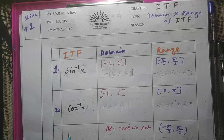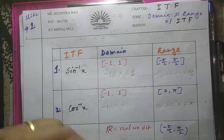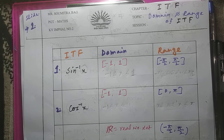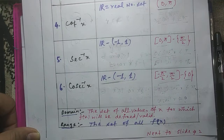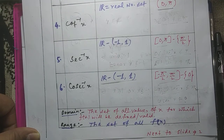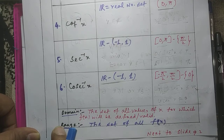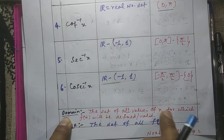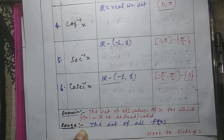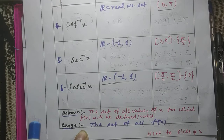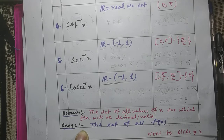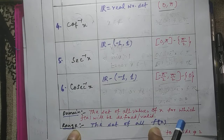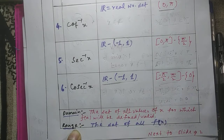Now let us come to the very important topic to be discussed in this chapter: domain and range for the ITFs. We have a total of 6 ITFs, and we need to know their corresponding domain and range one by one. Let us first recall what is the meaning of domain and range. The domain is the set of all values of x for which a function f(x) will be valid or defined — we gather all such x for which f(x) is defined. And the range is the set of all values of f(x).